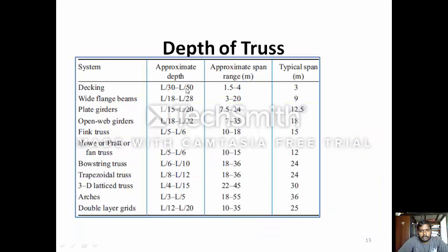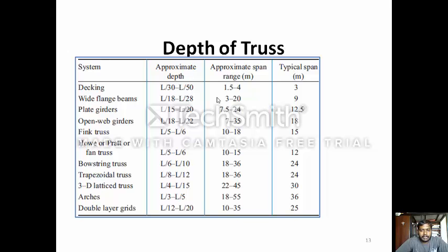Depth of the trusses: For decking it should be L/30 to L/15, with an approximate span range of 1.5 to 4 meters. The width of the flange beam should be L/18 to L/20 with an approximate span of 3 to 20 meters. The plate girder depth should be L/15 to L/20 with a span range of 7.5 to 24 meters. Flange trusses are L/5 to L/6 with an approximate span of 10 to 18 meters. Bowstring trusses are L/6 to L/10 with an approximate span of 18 to 36 meters. Trapezoidal trusses are L/8 to L/12 with an approximate span of 18 to 36 meters. Arches are L/3 to L/5 with an approximate span of 18 to 55 meters. Double-layer grids are L/12 to L/20 with an approximate span of 10 to 35 meters.